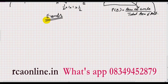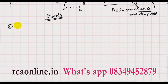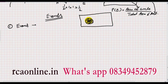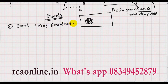Now I will take different types of events. Many students are very confused or afraid of types of events, so let me explain them simply. The first is a normal event. For example, the event that the ball hits inside the circle — this is a normal event. The probability is the area of the circle divided by the total area of the rectangle.